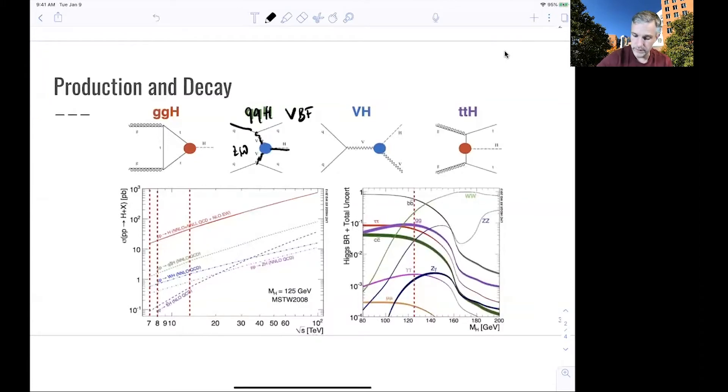We can also have associated production, where two quarks via a Z boson or W boson radiate another Z or W boson and generate a Higgs.